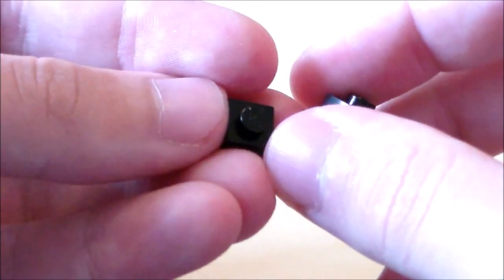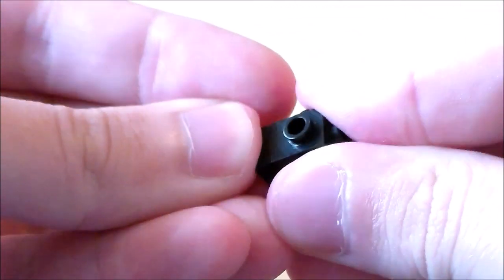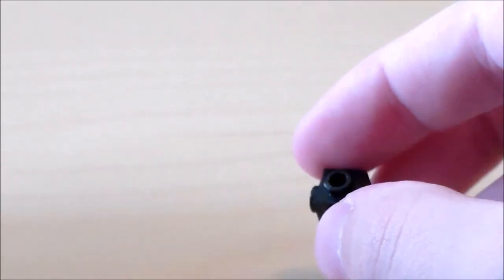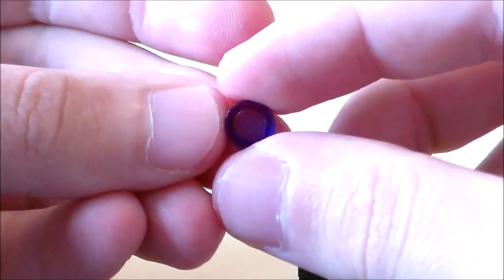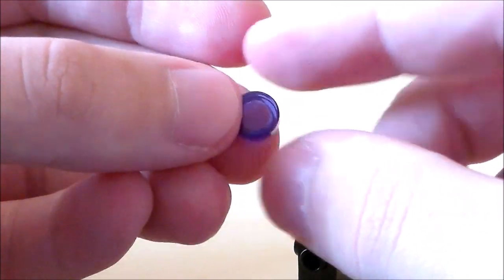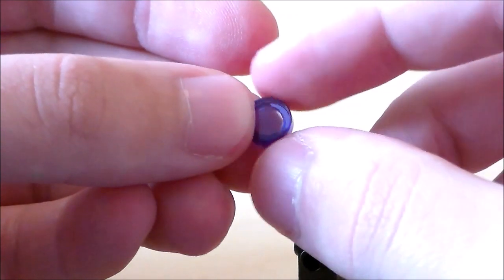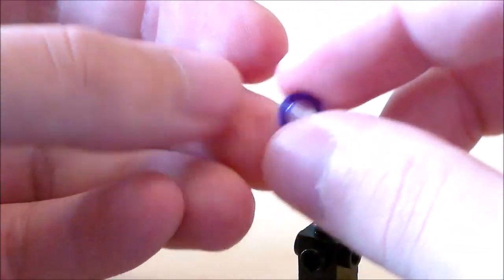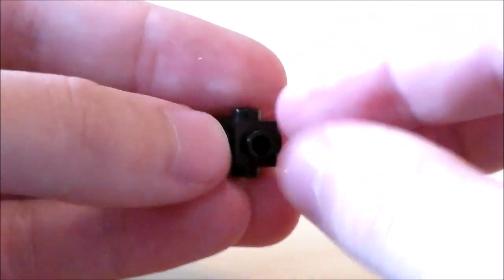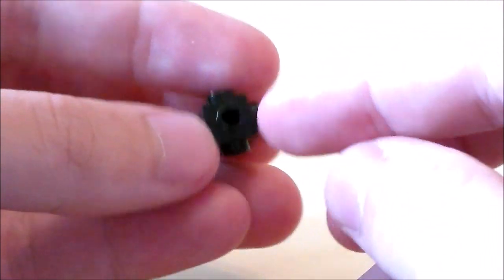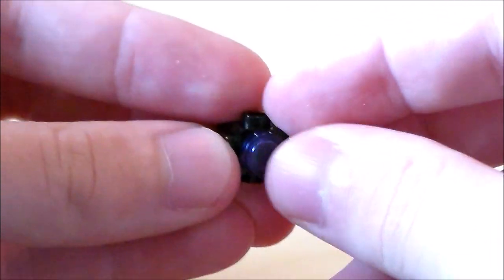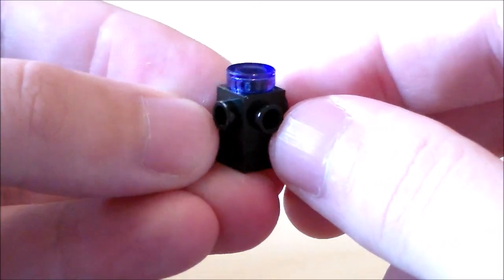Next I'm going to get a black 1x1 plate and put that on the bottom. Then I'm going to get one of these 1x1 translucent purple tiles in the round shape, and this will be the nether portal part on the top. If you want the Respawn Locker to be deactivated, you just don't put this piece on, but when you do want it to be activated, just put it on the top right there.